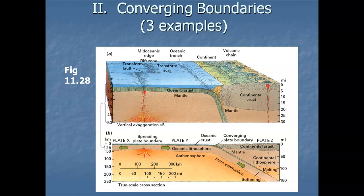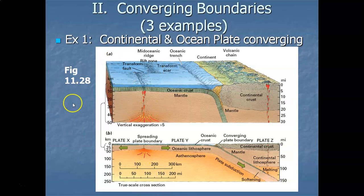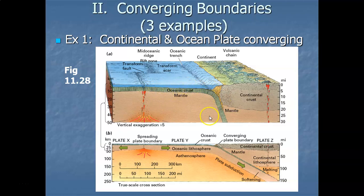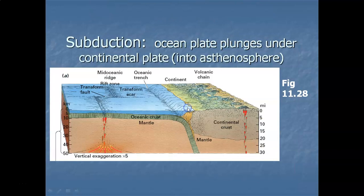That's what's going on on the seafloor of the Atlantic Ocean. Now let's look at the opposite: plates that are converging or meeting. I'll give three examples. The first scenario is the meeting of a continental plate with an ocean plate — the leading edge of a continental plate encountering the leading edge of an ocean plate.